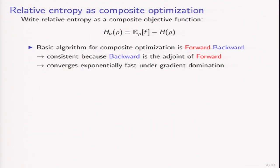This difficulty also carries over when we view relative entropy as a composite optimization problem. Let's write relative entropy as a sum of two terms: this potential energy and negative entropy. In general, a basic algorithm for composite optimization is the forward-backward method, which means we apply the forward method for one component and the backward method for the other. This works because the backward method is the adjoint of the forward method, which is important to make the stationary point preserved. Moreover, this forward-backward method still converges exponentially fast under the gradient domination condition.